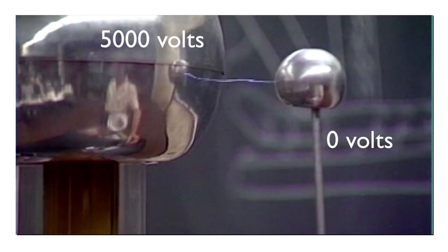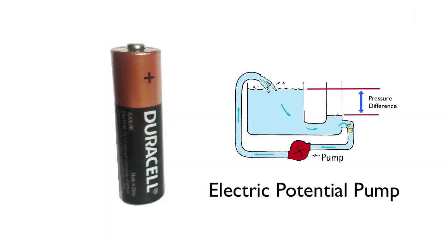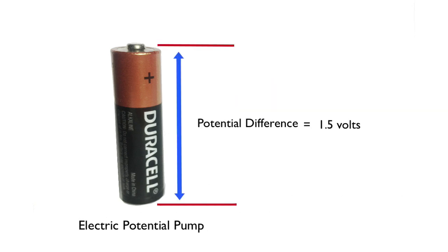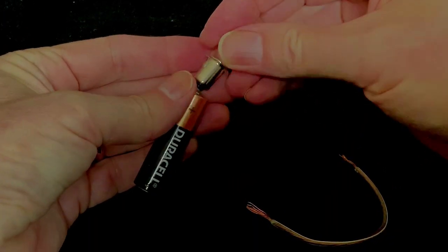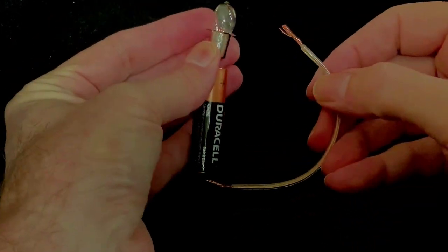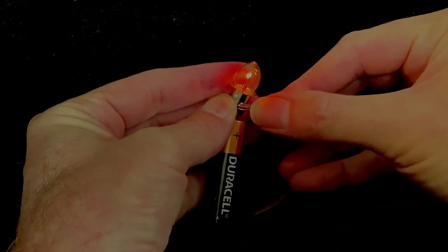A battery works as an electric potential pump. Chemical reactions within this battery assure that one side remains 1.5 volts higher than the other. Connect the two ends with a wire, and charge will flow through the wire, up until the chemical reactions have been depleted.